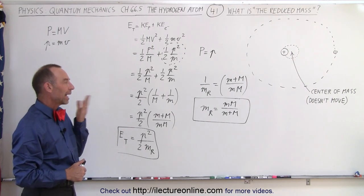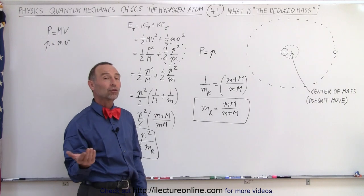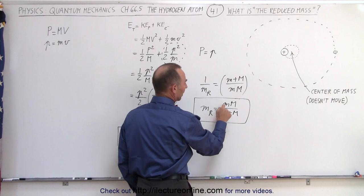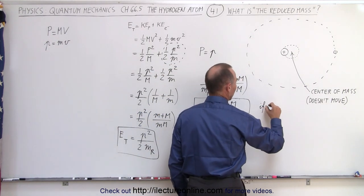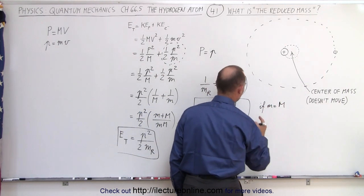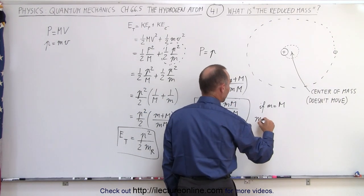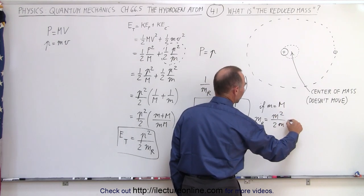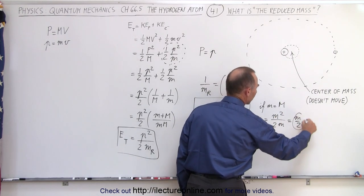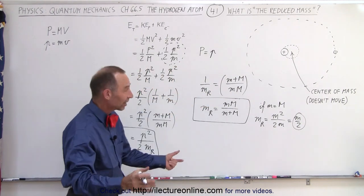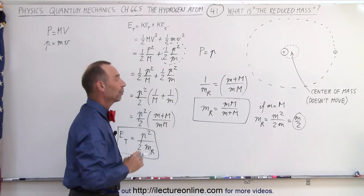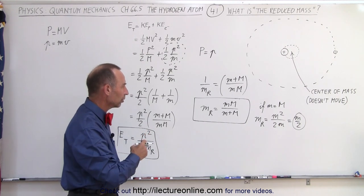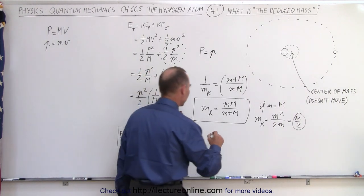Let's consider a couple of things. First, let's say the two masses were equal — if the mass of the proton equaled the mass of the electron, so m equals big M. Then the reduced mass would be m squared divided by 2m, which equals m over 2. So if the two masses of the two objects were exactly the same, the reduced mass would only be half of what it normally would be. But of course that's not the case here — the mass of the electron is much smaller than the mass of the proton. So let's plug in some values.